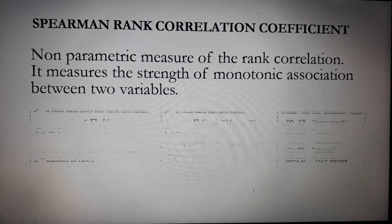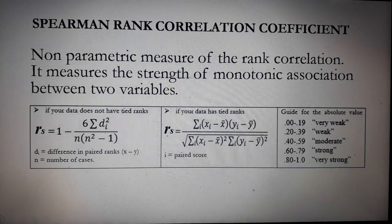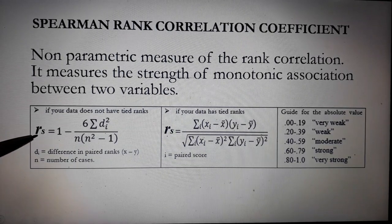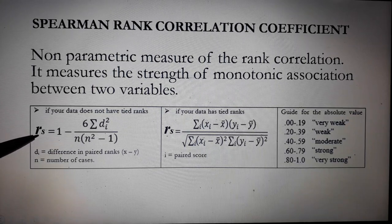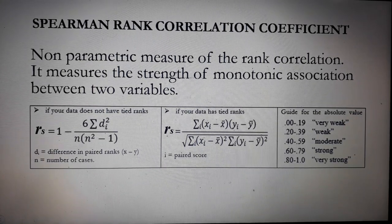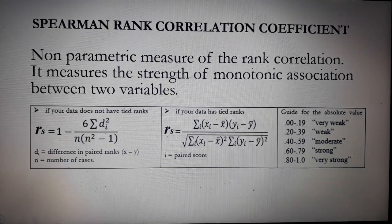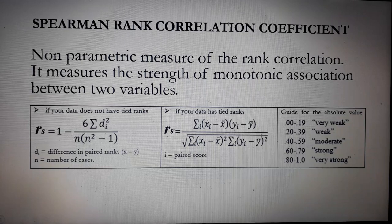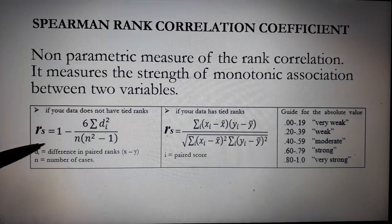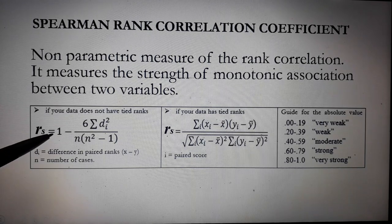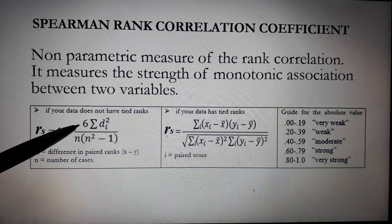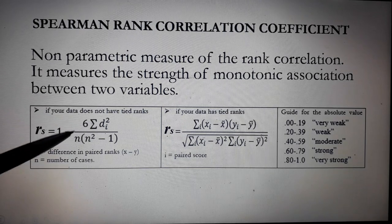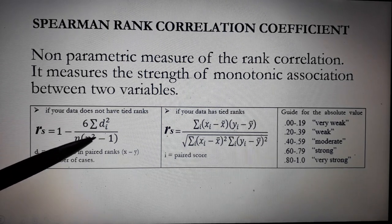Now the equation used to determine the Spearman Rank Correlation Coefficient. We have two equations presented here. The symbol for the Spearman Rank Correlation Coefficient is R with a subscript of S. For the data who doesn't have tied ranks, we will use this equation. So the equation reads, Spearman Rank Correlation Coefficient is equal to 1 minus the quantity 6, another constant, times the summation of D squared over N times the quantity N squared minus 1.